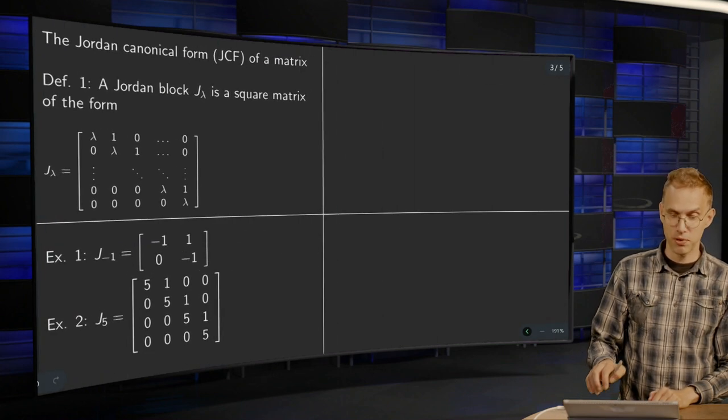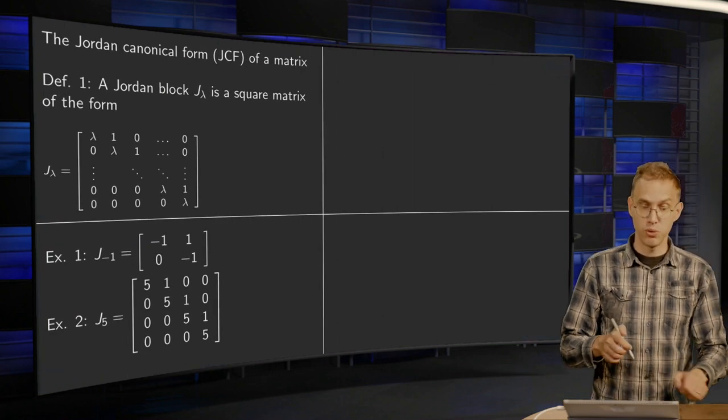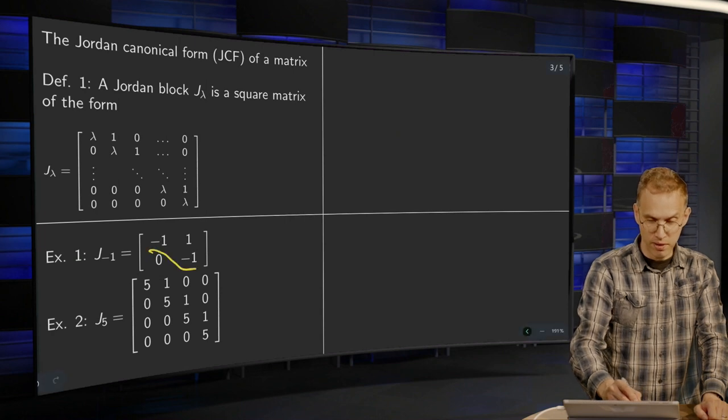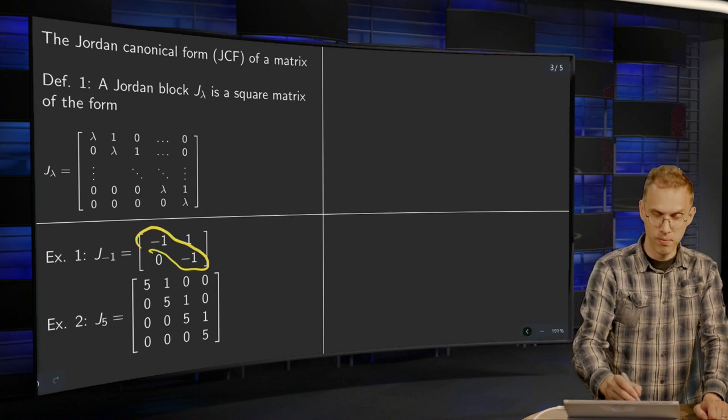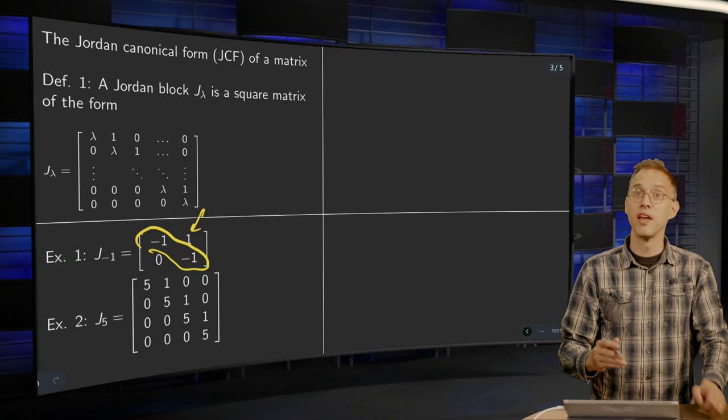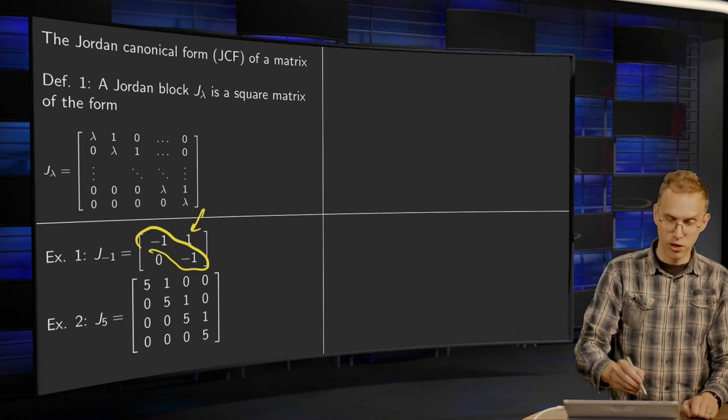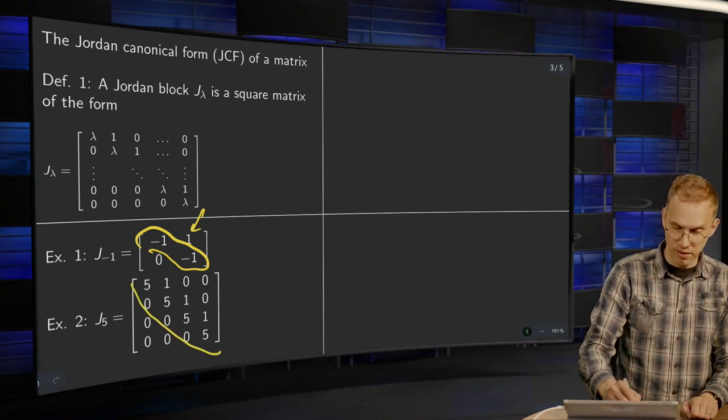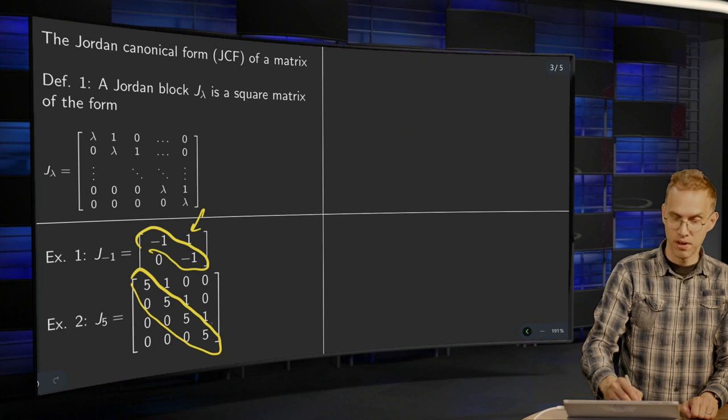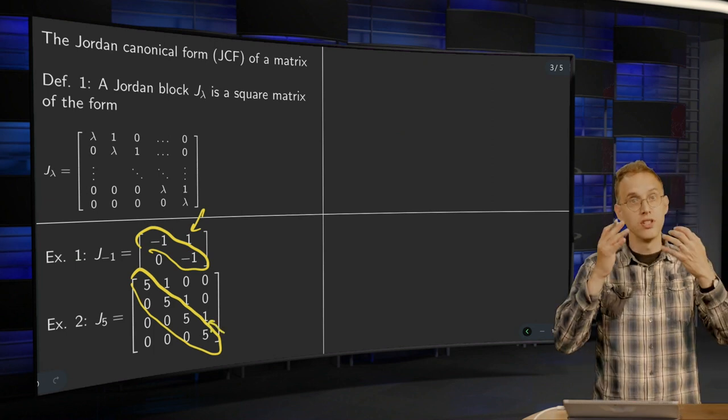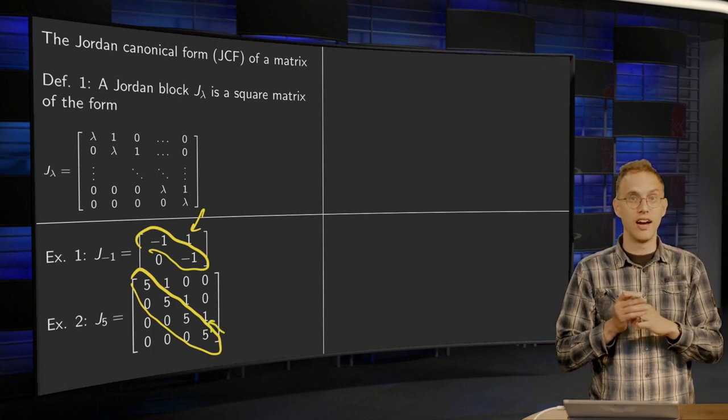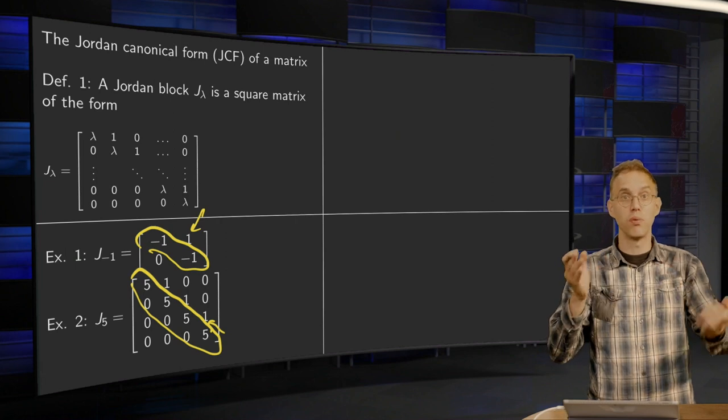So let us take a look at a few examples. For example, a 2x2 Jordan block. Here we have the minus ones on the diagonal and the one above. And a 4x4 Jordan block, for example. Here we put 5 on the diagonal and the ones above. So you can really recognize easily whether we have a Jordan block or not.